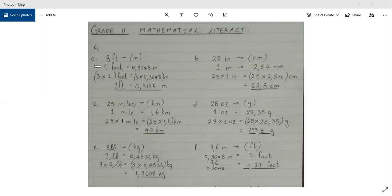You are given that 1 foot equals 0.3048 meters and you need to convert 3 feet to meters. So you multiply the left hand side of the equation by 3 and you multiply the right hand side by 3 as well, which gives you 3 feet is equal to 0.9144 meters.